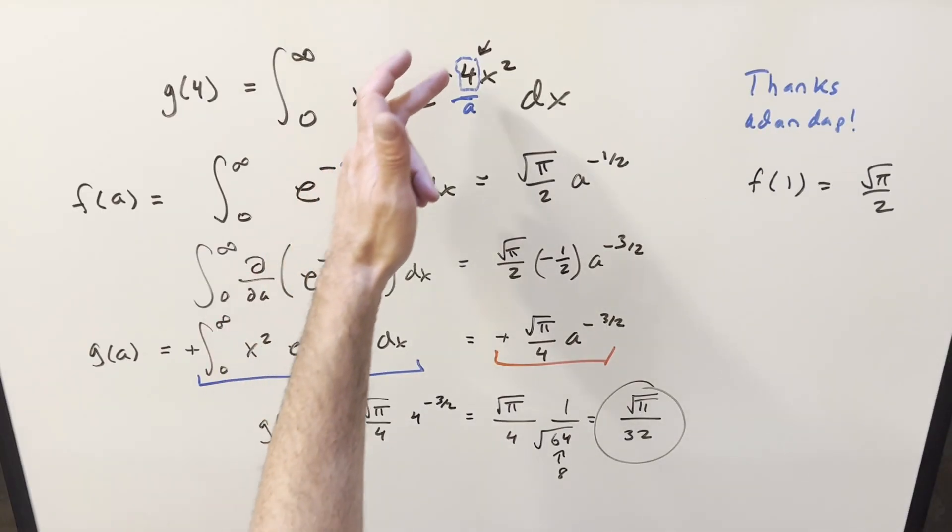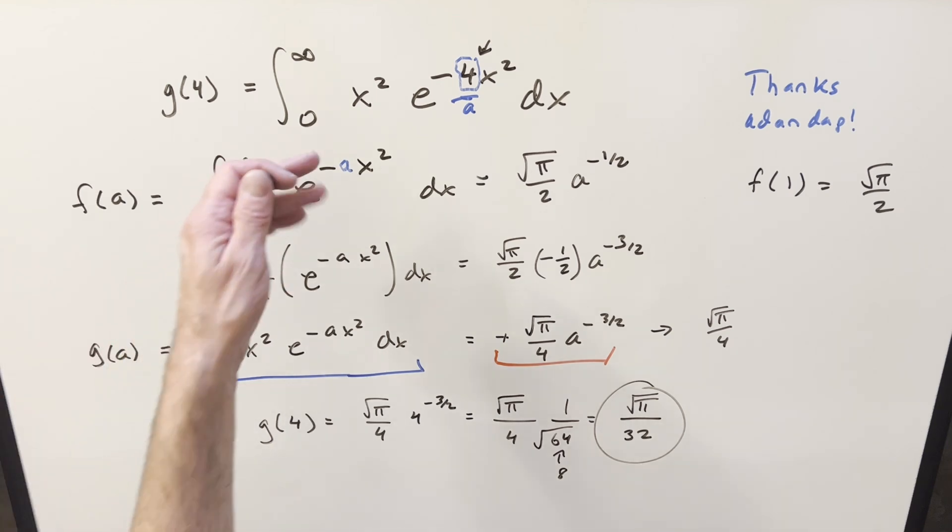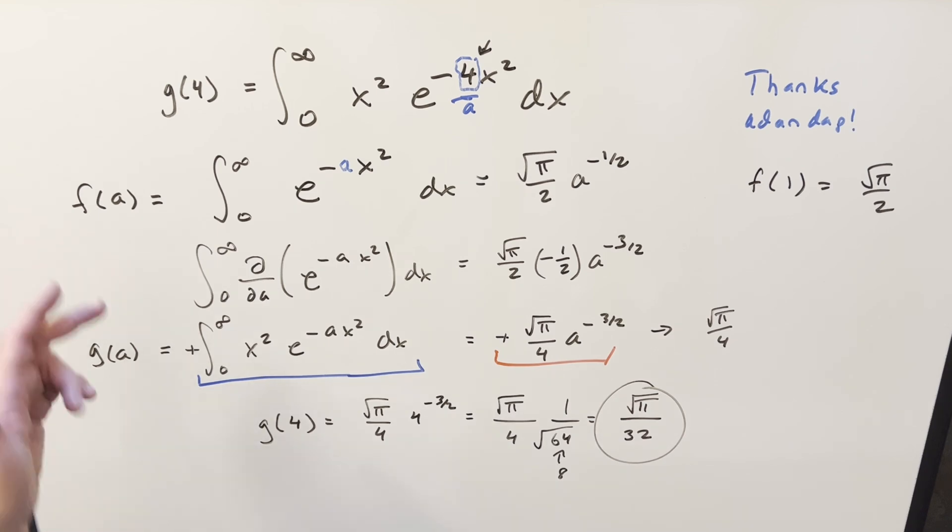And so going back to that other video, we had the case where the a value was 1. If you plug a 1 in here, that's pretty easy too. We would have just square root of pi over 4. One thing I think I forgot to mention on this is the way we did it in the other video was we did, I think it was use substitution integration by parts. That's kind of the more straightforward way on that. This is probably more interesting. I don't know. You can do either way. Do whatever you got to do. Anyway, you can do it either way. I kind of prefer this way just because it's more fun. Anyway, thanks again to Dan Dapp for the suggestion. Thanks everyone for watching. Have a good day.